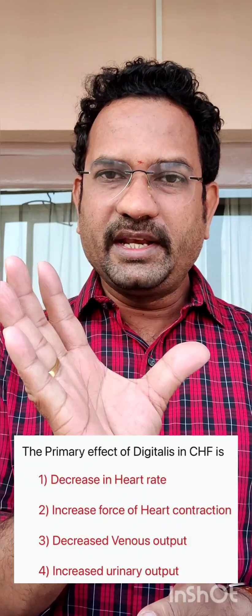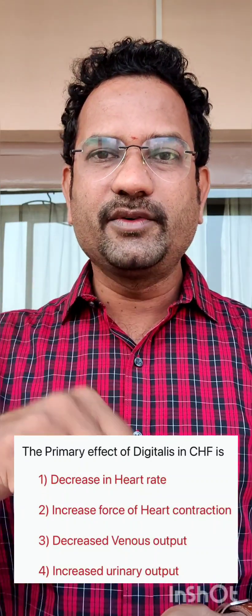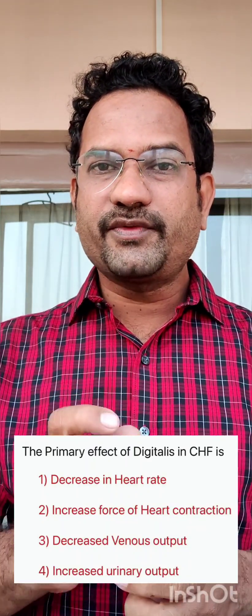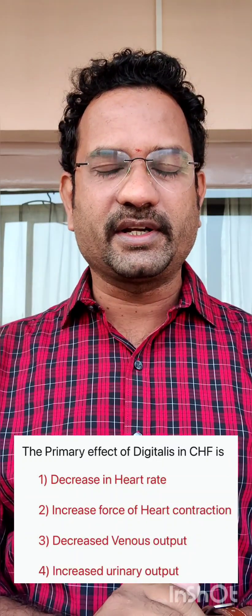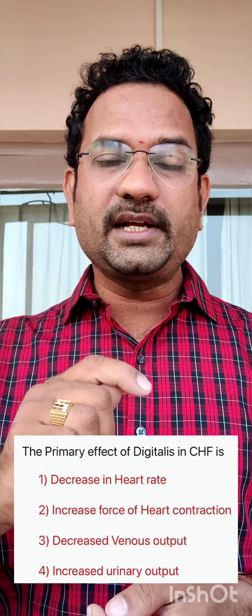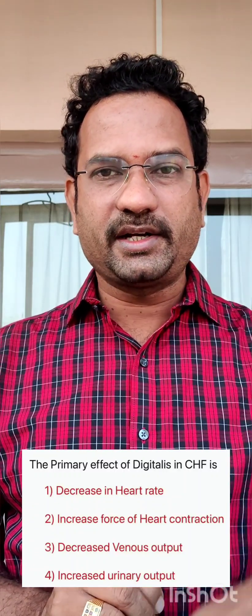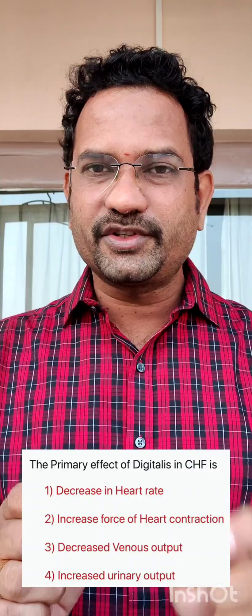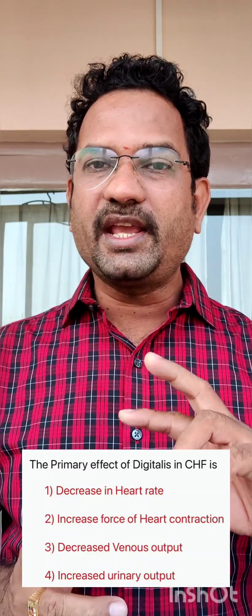Any agent that increases heart rate is called a positive chronotropic agent; any agent that decreases heart rate is called a negative chronotropic agent. The question asks for the primary effect of digitalis. Digitalis also has a secondary or indirect effect: it indirectly activates vagus nerve stimulation. When the vagus nerve is stimulated, the parasympathetic system is activated, and heart rate is reduced — that is negative chronotropic action. Both options A and B are digitalis actions, but option B is the primary action and option A is the secondary or indirect action.